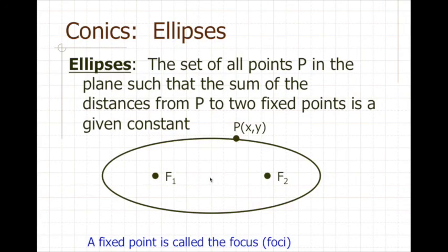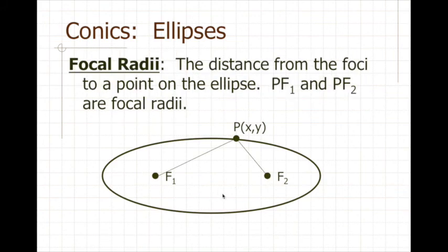That was how we created an ellipse. Now let's look at some vocabulary associated with the ellipse. The foci are the two fixed points of the ellipse. Then we have focal radii — the distances between each focus and a point on the ellipse. PF1 is a focal radius and PF2 is a focal radius, and we have two of these for the ellipse.